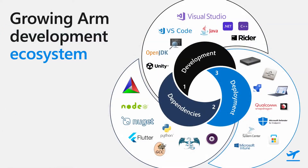When it comes to ARM development tools, all major frameworks, IDEs, and utilities support ARM64 development. Visual Studio, VS Code, .NET, Java, and OpenJDK all support native ARM development. For middleware and open source components, Python, NuGet, Flutter, GCC, and Unity Engine all support native ARM development.